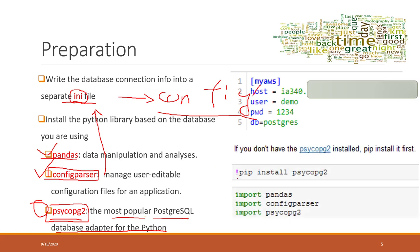In Python, if you want to install a Python library, you need to use pip install. In a notebook, you need to type the exclamation mark before the pip command, then the library name. If you already have those Python libraries installed, you don't need to install them again. However, if your Python environment does not have those libraries, you have to install them first.